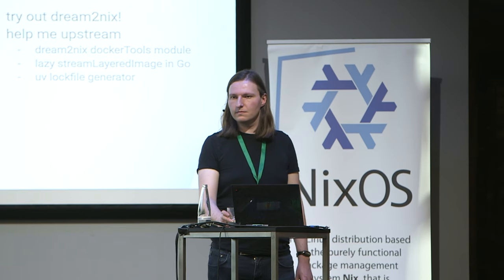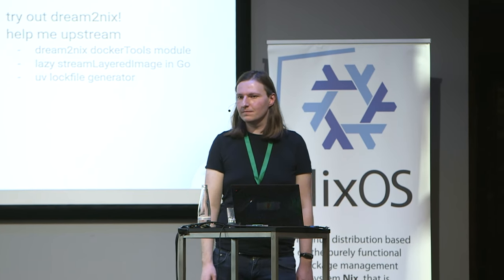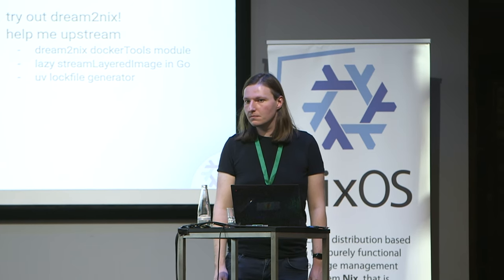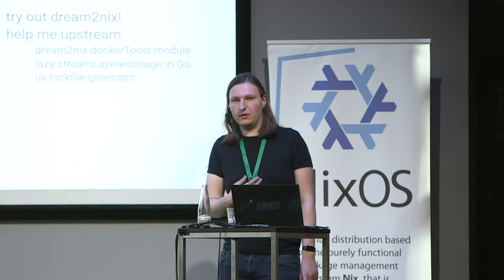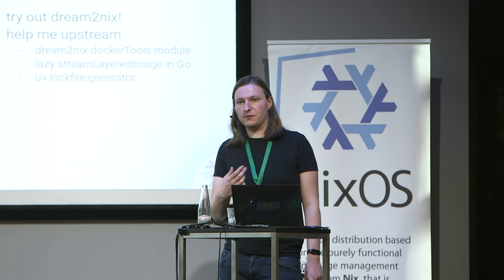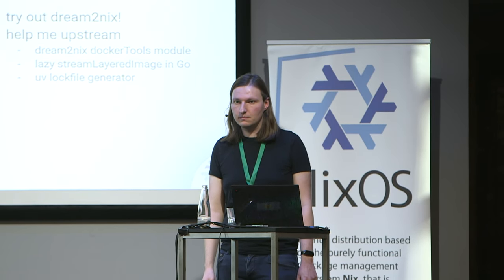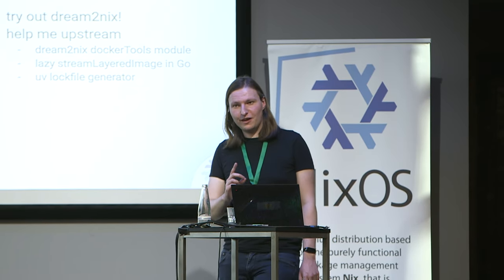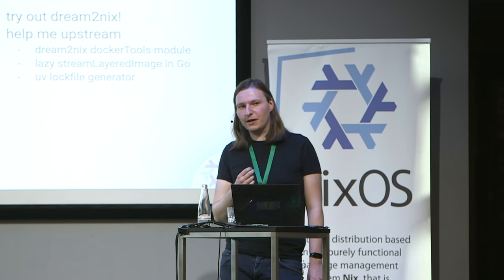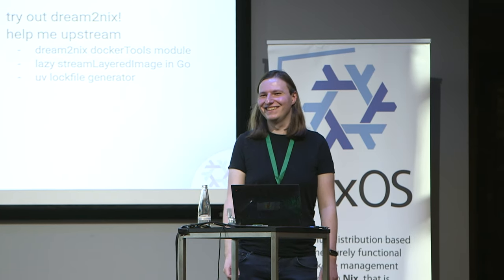Quick one: the streamLayeredImage — we also have speed problems with that one. Does the Go-based lazy version still work with just piping to docker load? Yes, but it's not as fast because it still has to read all of the files in the Nix store. But it still works and you can generate streams with it. It should be a drop-in replacement, except that the way Go generates tarballs and the way Python generates tarballs is not quite compatible, so the hash ends up differently.